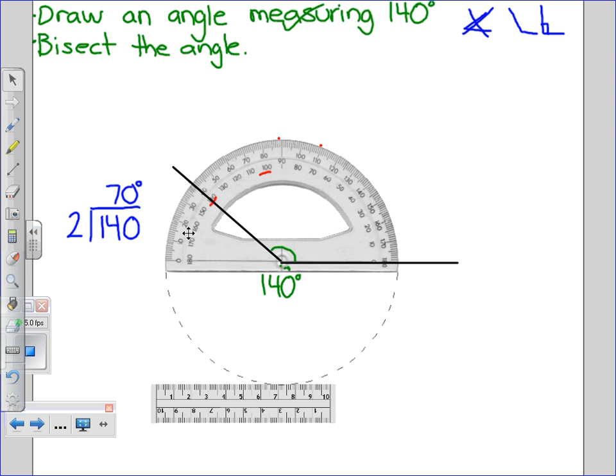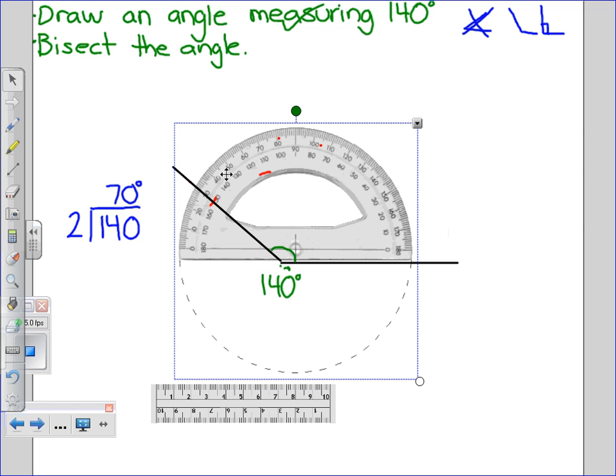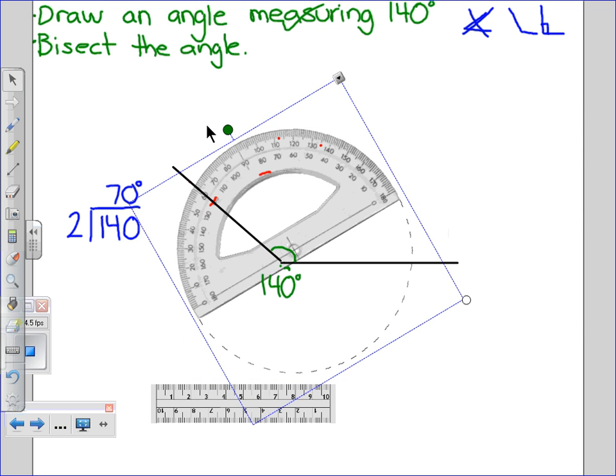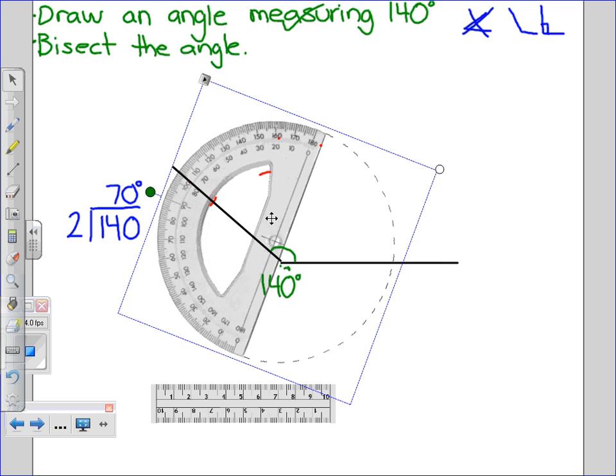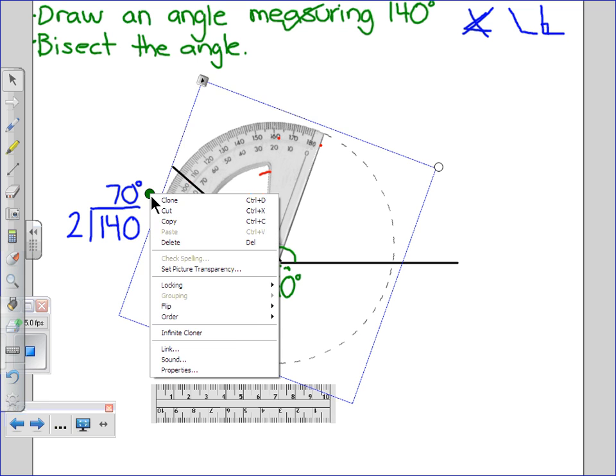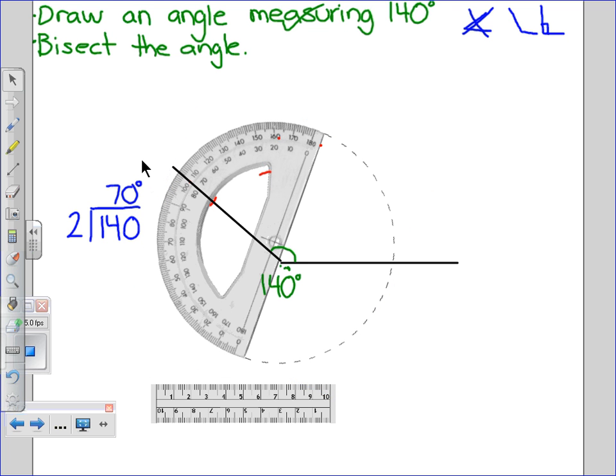Moving your protractor, or you can use the flat edge of your protractor. And I'm going to put that so that the straight edge goes through the vertex of my angle and the dot that I drew to indicate 70 degrees. And now, I draw a straight line from the vertex out through the dot.